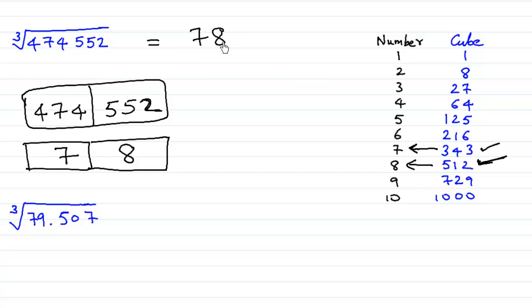So again if you use your calculator or if you do it in the corner, 78 into 78 into 78, you shall be getting 474552.